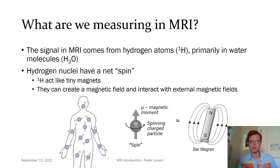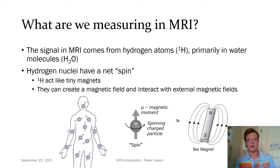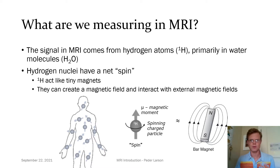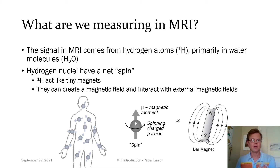So what are we measuring in MRI? What is the source of our signal? All of our signal comes from hydrogen atoms. They are 80% of the atoms in our body, and they are found primarily in water molecules, H2O, which makes up a large percentage of your body. The hydrogen nuclei have this property called spin. This is a physics phenomenon at the nuclear level, and what it means is basically these hydrogen atoms act like tiny magnets.